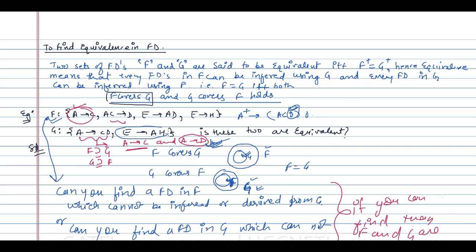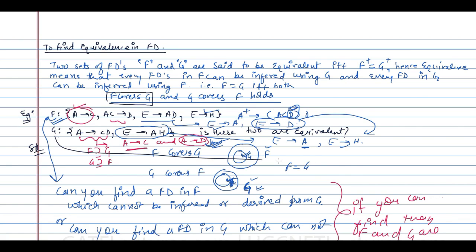In G, we also need E→AH. E→H is present in F directly. E→A is also present in F since E→AD gives E→A. E→D is present in F directly. Now take E-closure in G: we get E, A, H, and using A we can derive C and D. So E-closure contains D, meaning E→D is also covered in G.